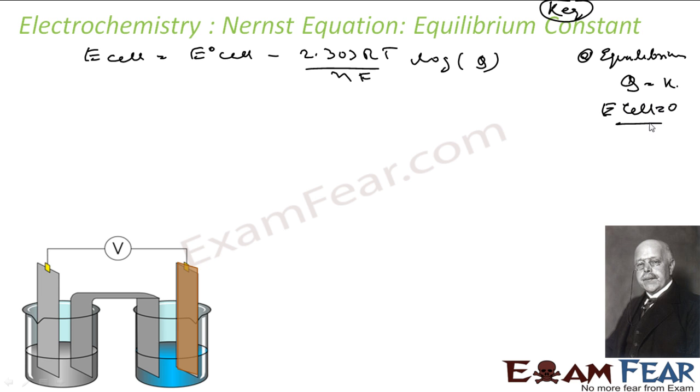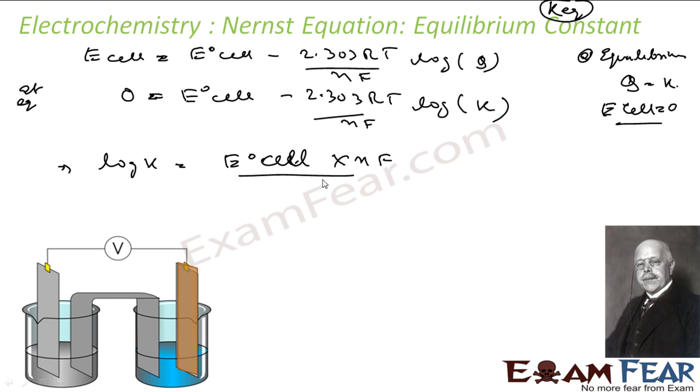So E cell will become 0. Please note E° cell will not become 0, this will become 0 because the cell will become dead. So at equilibrium this will become 0. E° cell is a standard value we can't change, minus 2.303RT by NF, Q becomes K. So with this, log K is nothing but E° cell into NF by 2.303RT. That is the formula with this you can easily find the K equilibrium for a cell.